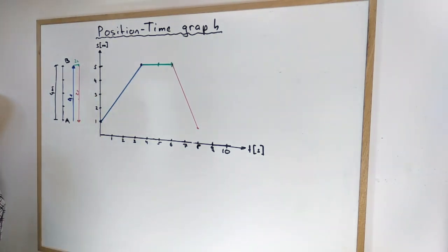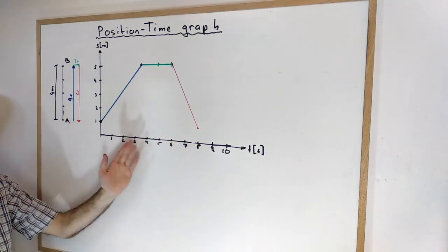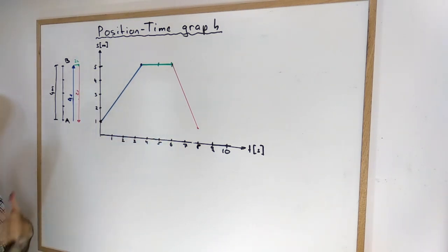And here's my first example of a position-time graph, and now I can know really for any moment in time where exactly the object was.